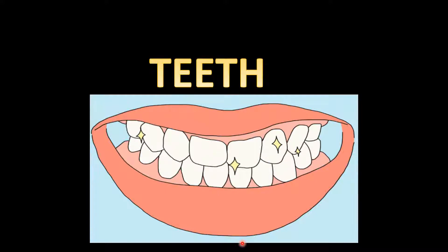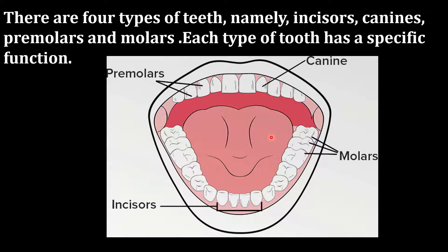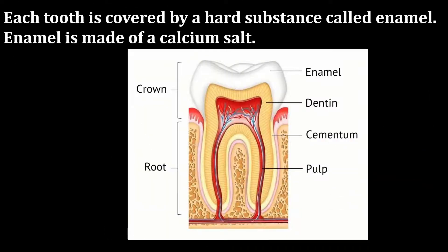Now let us understand about teeth. The process of digestion begins with the function of the teeth in the mouth. There are four types of teeth: incisors, canines, premolars, and molars. Each type of tooth has a specific function. Each tooth is covered by a hard substance called enamel. Enamel is made up of calcium salts.